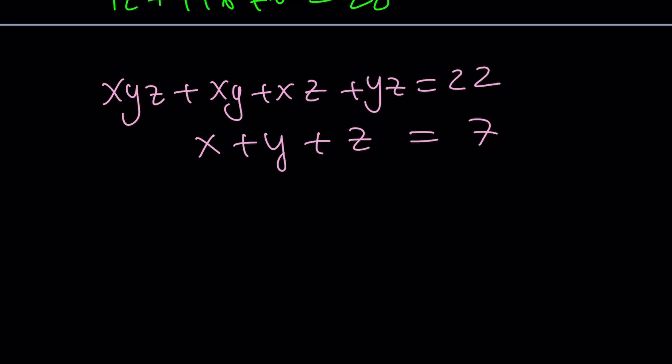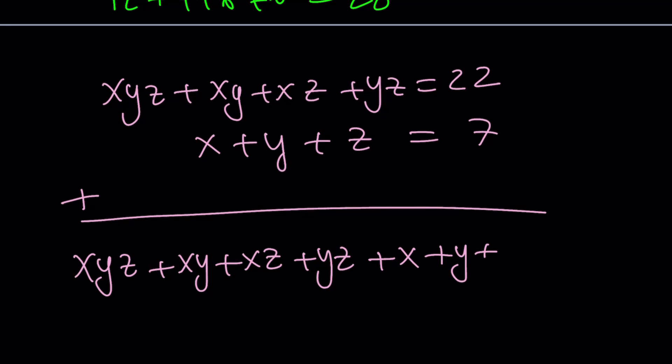So here's what we're going to do. We're going to add these two equations. And you'll see in a little bit why we're doing it. And if we add them, we're going to get something like this. xyz + xy + xy + xz + yz + x + y + z = 29.